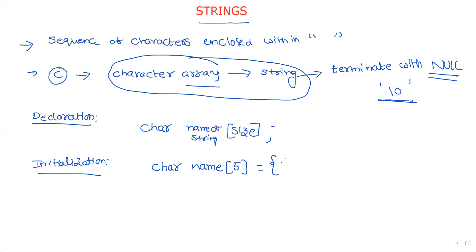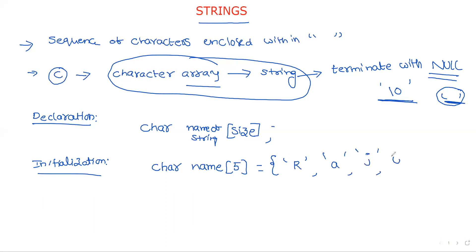How do we assign elements in the array? Within flower brackets: element one, element two, element three, and so on. Here, since it is a character, each character is enclosed within single quotations. For example, if my string is 'R', 'a', 'j', 'u', and then the null character.